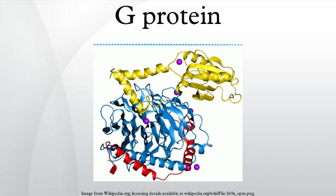G-proteins, also known as guanine nucleotide-binding proteins, are a family of proteins that act as molecular switches inside cells, and are involved in transmitting signals from a variety of stimuli outside a cell to its interior. Their activity is regulated by factors that control their ability to bind to and hydrolyze guanosine triphosphate (GTP) to guanosine diphosphate (GDP). When bound to GTP they are on, and when bound to GDP they are off. G-proteins belong to the larger group of enzymes called GTPases.